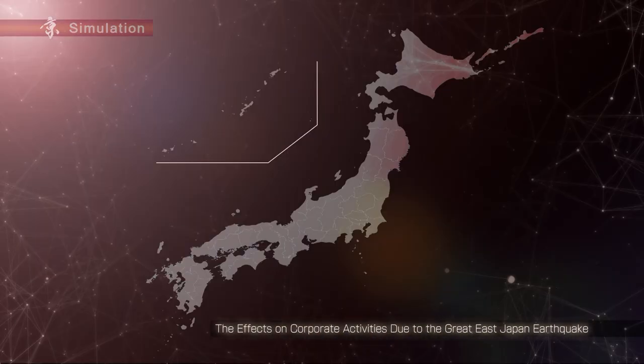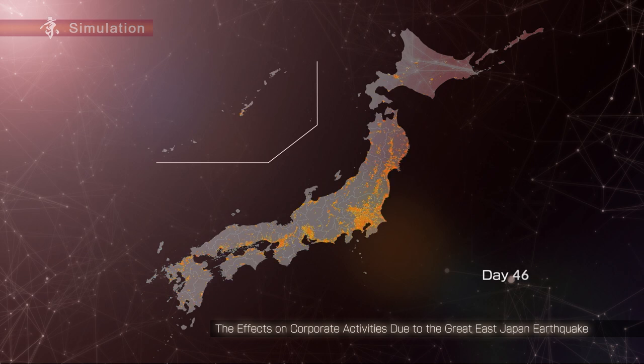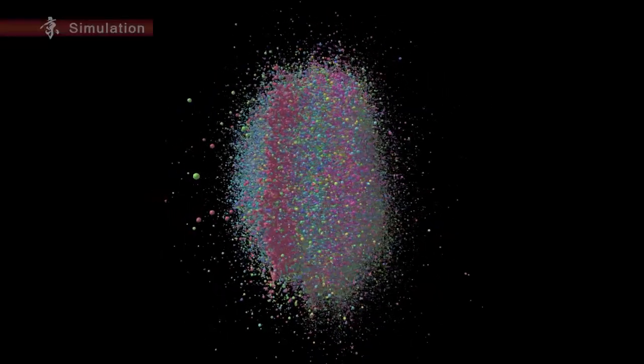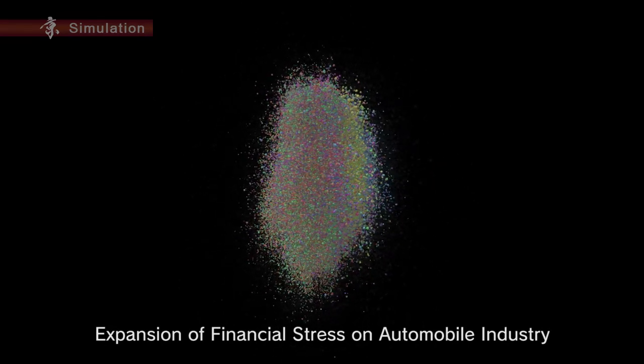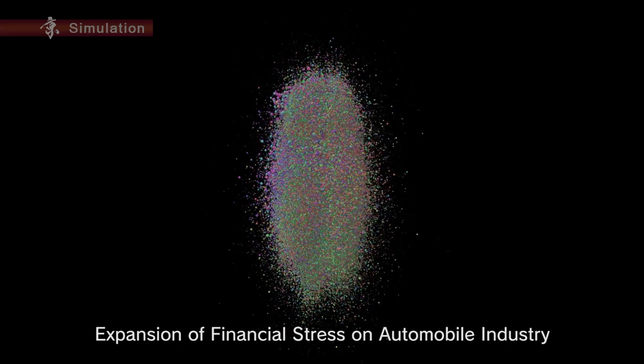Associate Professor Hiroyasu Inoue of the University of Hyogo has utilized existing data from approximately 1 million companies and their 5 million transactions to simulate how the effects of the Great East Japan earthquake spread through corporate activities. Professor Yoshi Fujiwara at the University of Hyogo has performed simulations on how financial stress in general, such as economic crises and a domino effect of bankruptcies, spreads among companies. Professor Fujiwara and Associate Professor Inoue are developing simulations to make more precise predictions on economic networks.